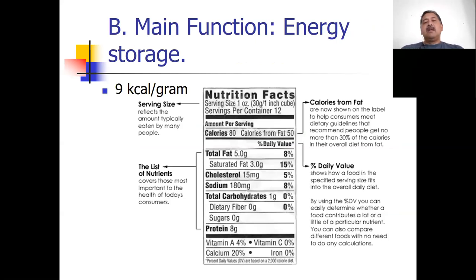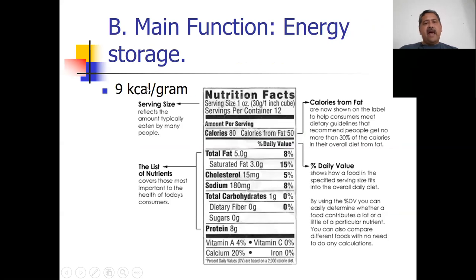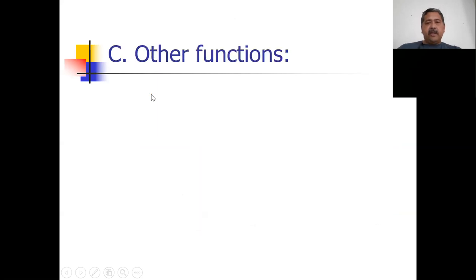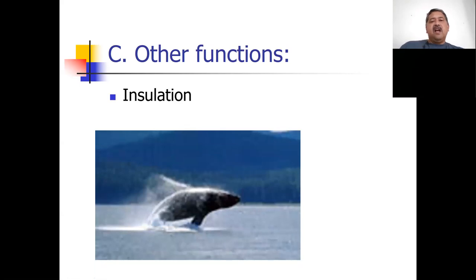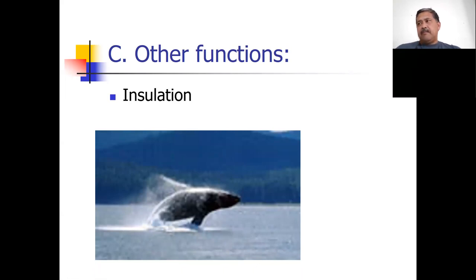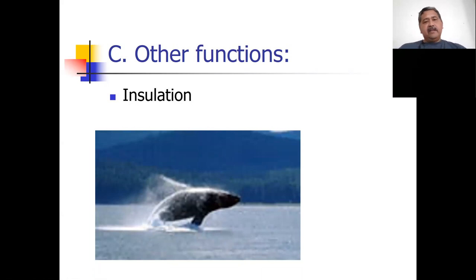Looking at a nutrition facts label — fats are really good at storing energy, twice as good as protein or carbohydrate. The label shows you get nine Calories (kcal) per gram of fat, whereas proteins and carbohydrates give you only four. Another function of lipids is insulation. Whales are mammals — endotherms with an internal heat pump — and they require a lot of insulation to maintain body temperature in cold ocean water. Depending on their size, whales may have up to a foot of blubber insulating them.